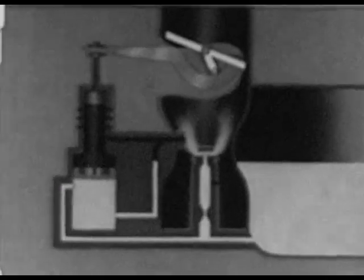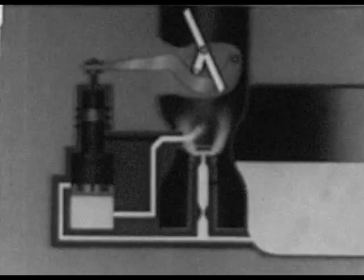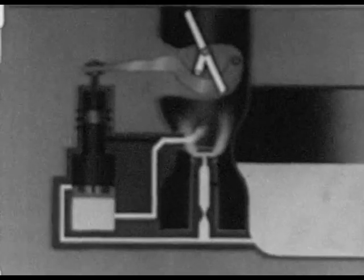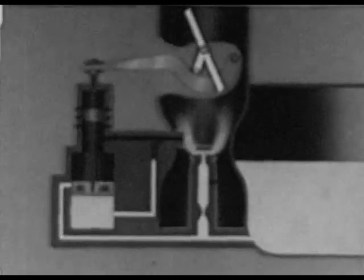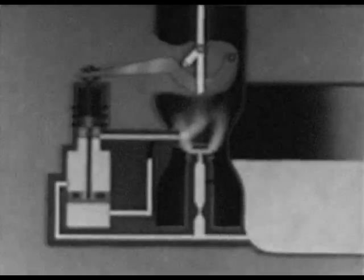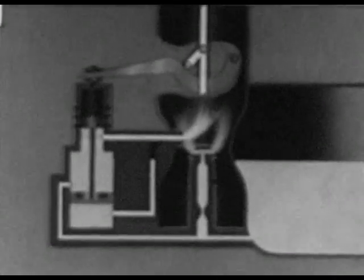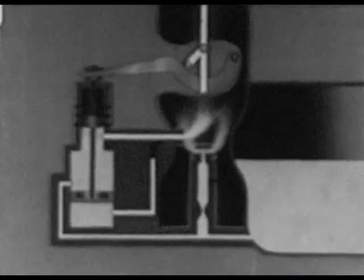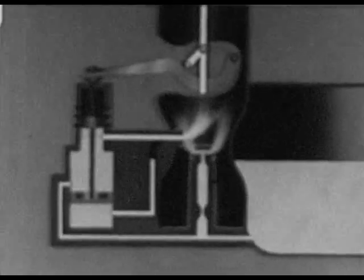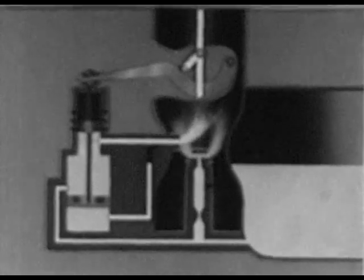As the throttle is opened, a spray furnishes temporary enrichment, which will be explained later. The lower piston then uncovers the fuel port so that fuel is drawn through the system and out the discharge nozzle. The upper piston cuts off the air bleed to the economizer nozzle, thus increasing the suction on the fuel jet.